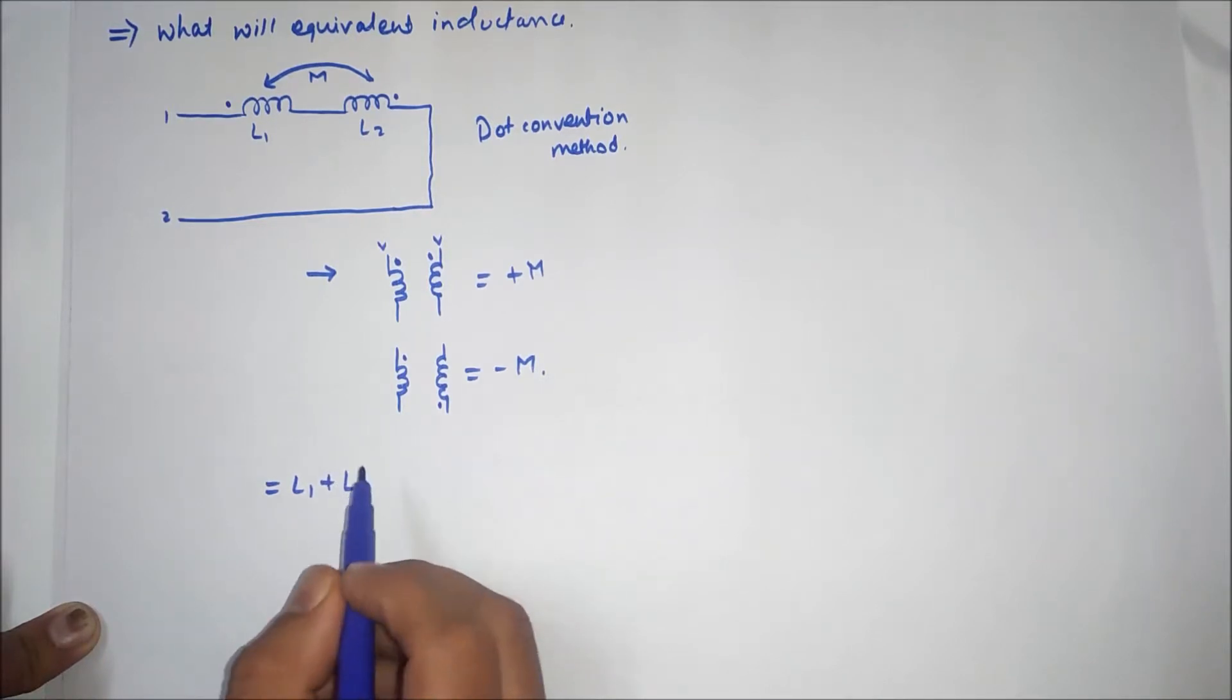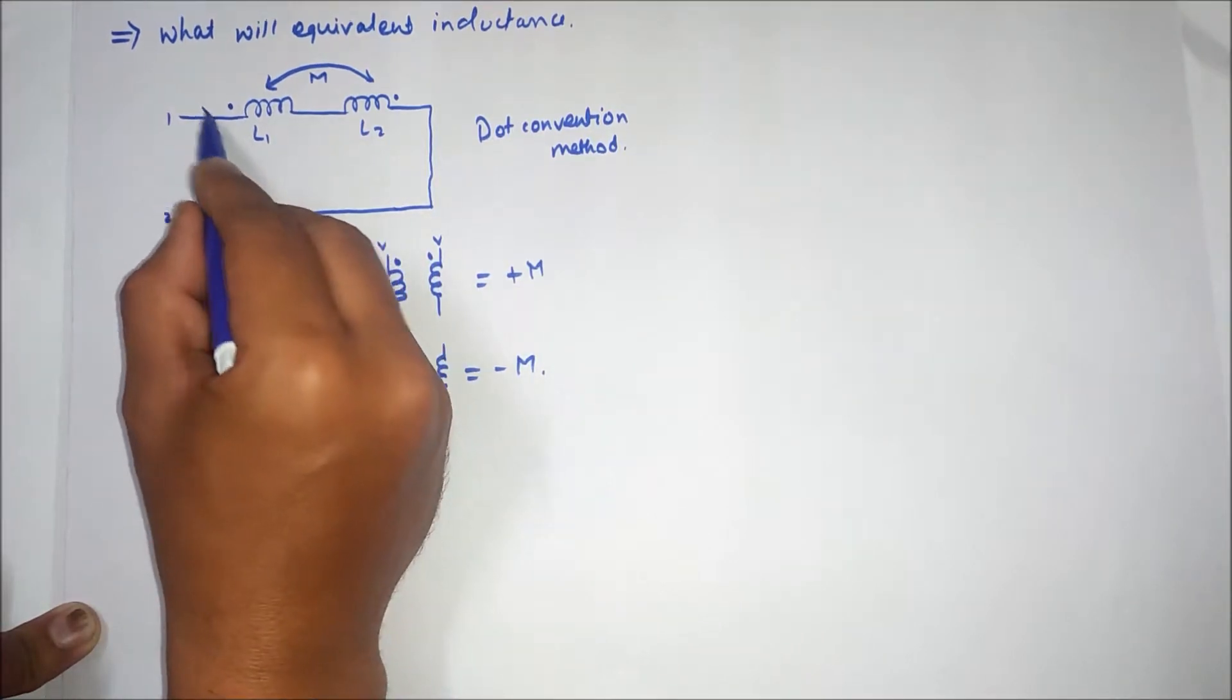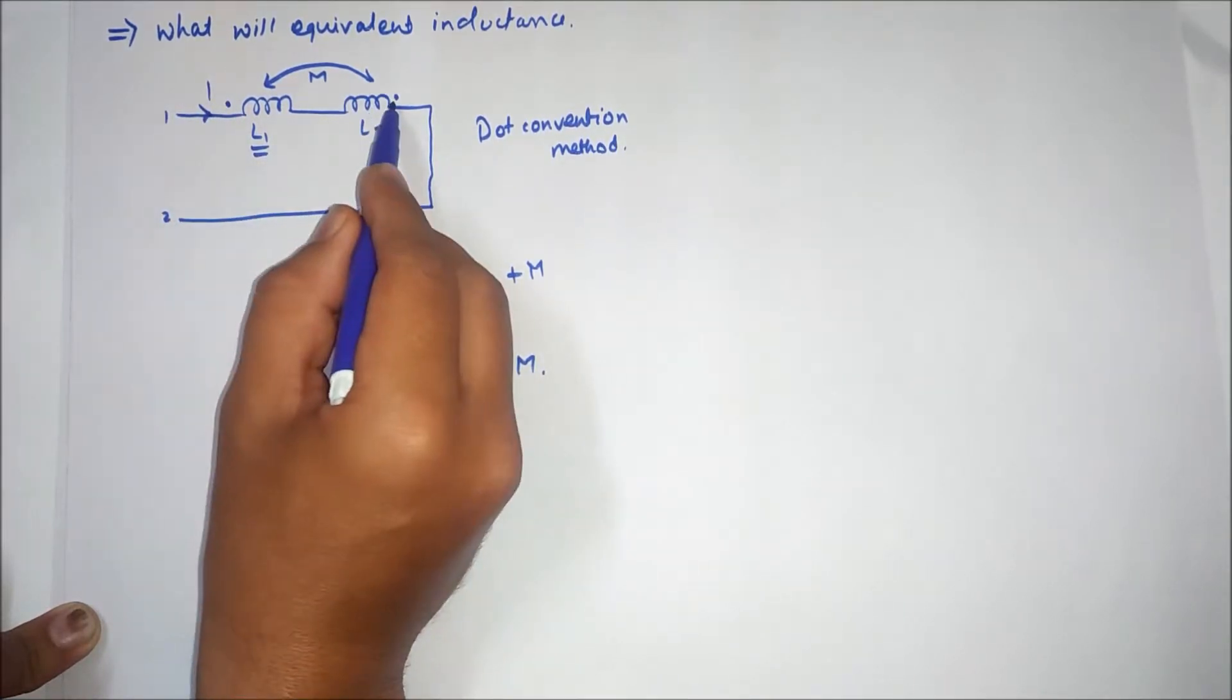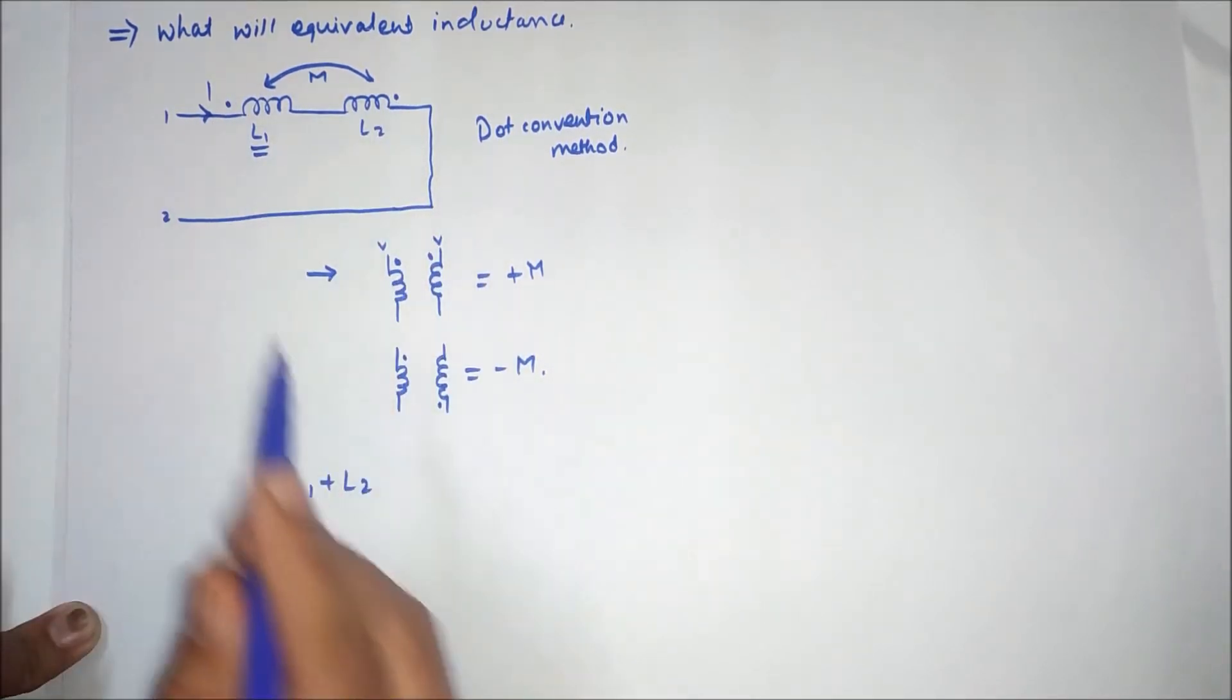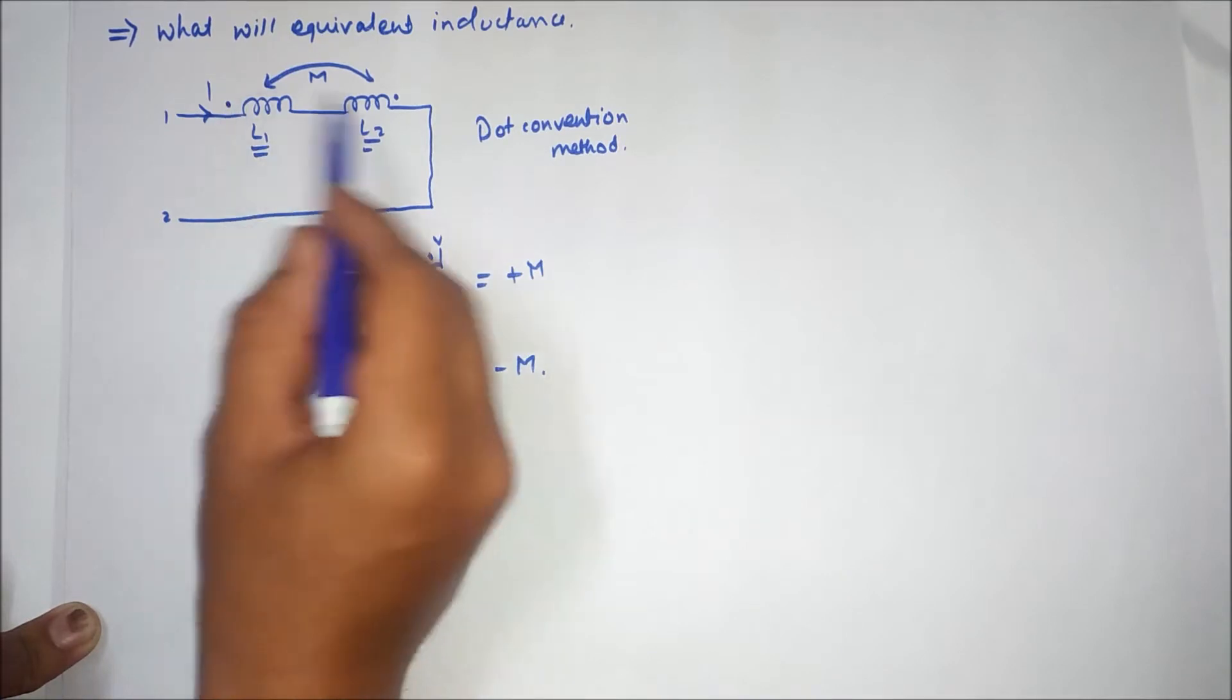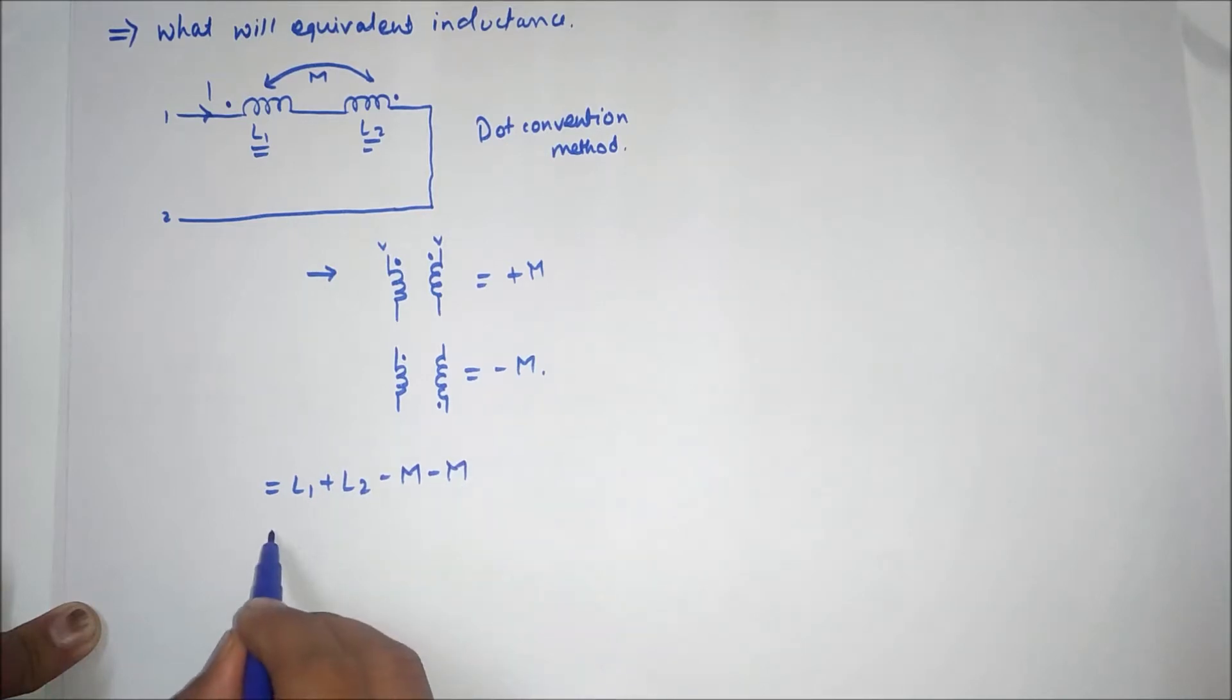Suppose we have L1 here. Current enters from this dot and leaves from the other dot, but the direction of the dot is opposite, so we will write minus M. Now considering L2, same current entering and current leaving, so sign will be minus M. So our answer will be L1 plus L2 minus 2M.